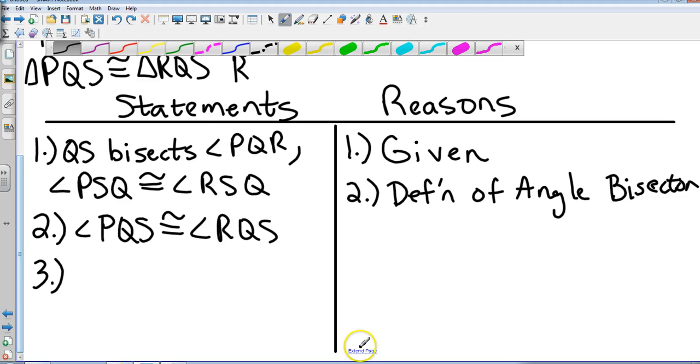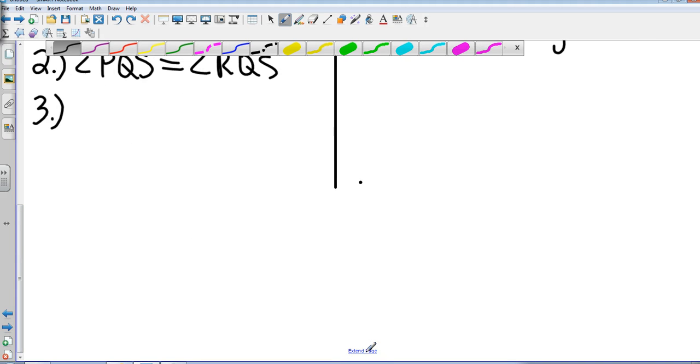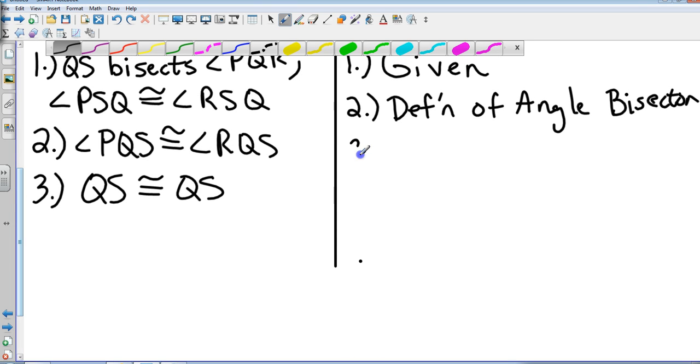So now I have two angles congruent. I need to work on that side. We'll notice on our shape that obviously QS equals QS because it's the same side, but I need to know the reason. So let me extend this a little bit so I can write QS is going to equal itself, and when something equals itself, that is the reflexive property.